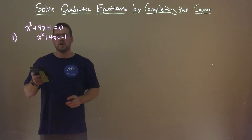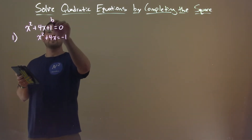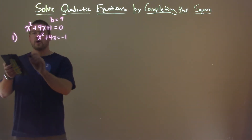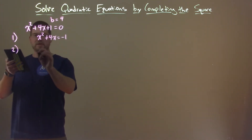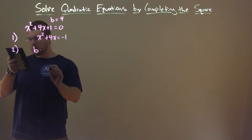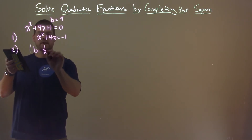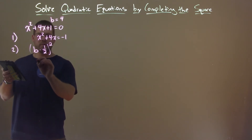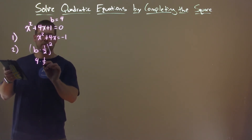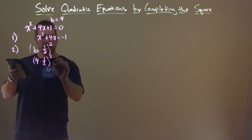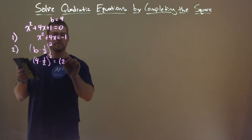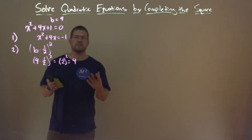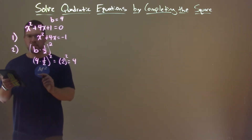Our b term in this case is b equals 4. Our second step says we take that b term, multiply it by one half, and then square it all. So if b is 4, we have 4 times one half squared. 4 times one half is 2, and squaring that gives us 4. It's coincidental that it's 4, but it is 4.